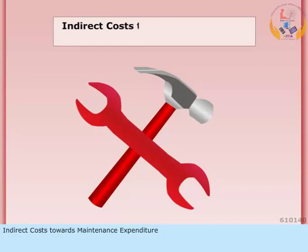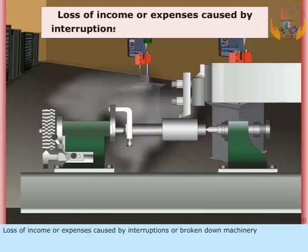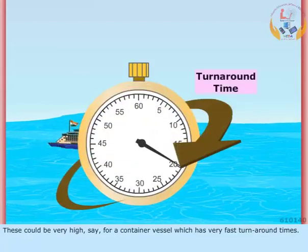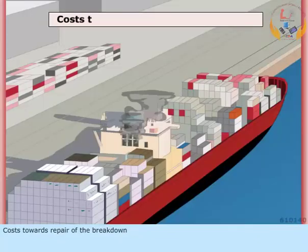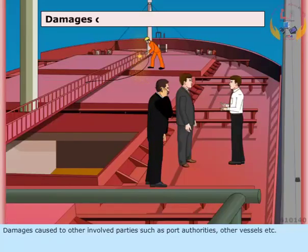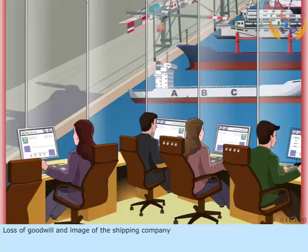Indirect costs towards maintenance expenditure include: loss of income or expenses caused by interruption or broken-down machinery, which could be very high — for example, for a container vessel with very fast turnaround times. Also included are costs towards repair of the breakdown, damages caused to other involved parties such as port authorities and other vessels, and loss of goodwill and image of the shipping company.